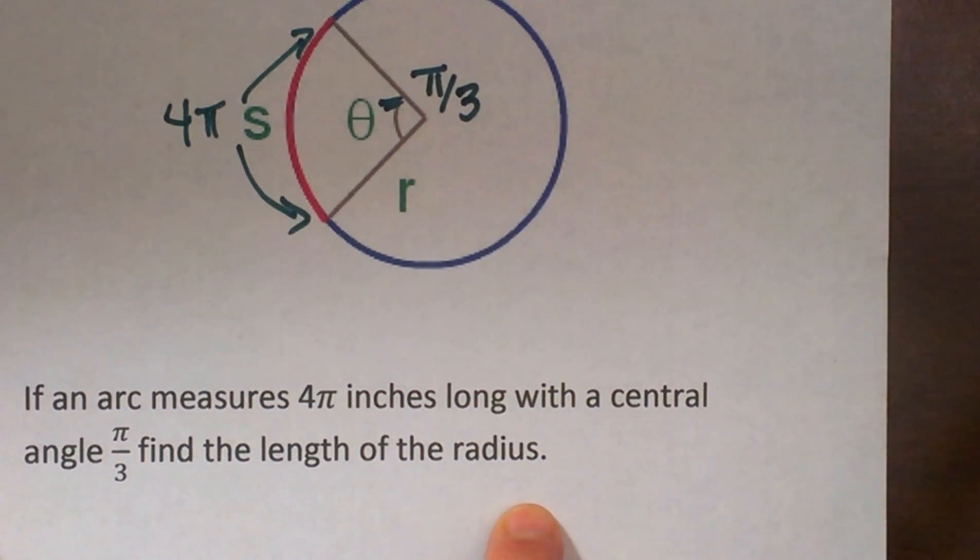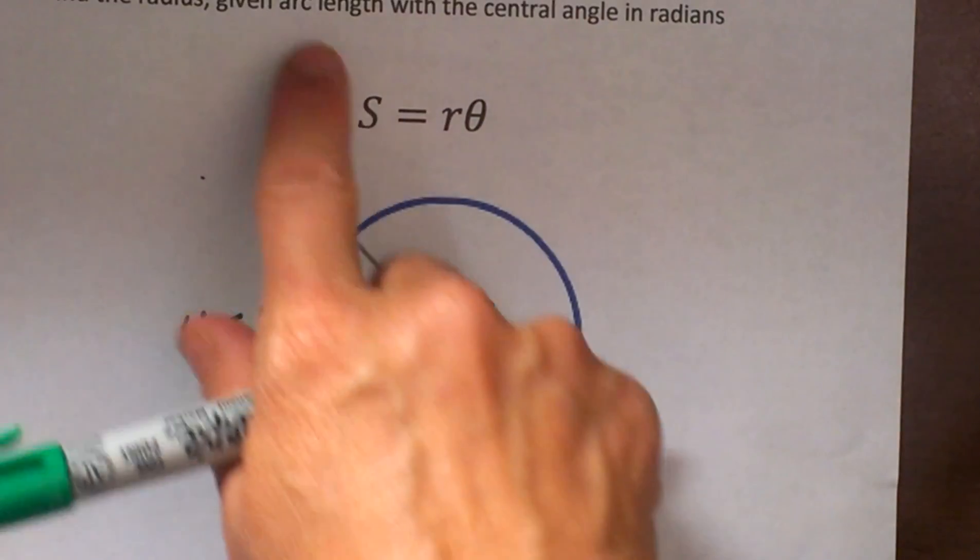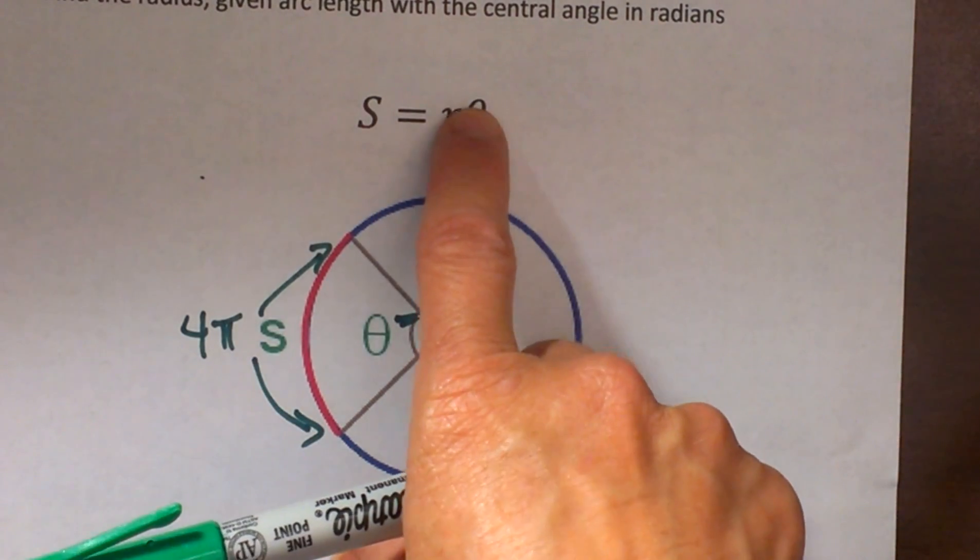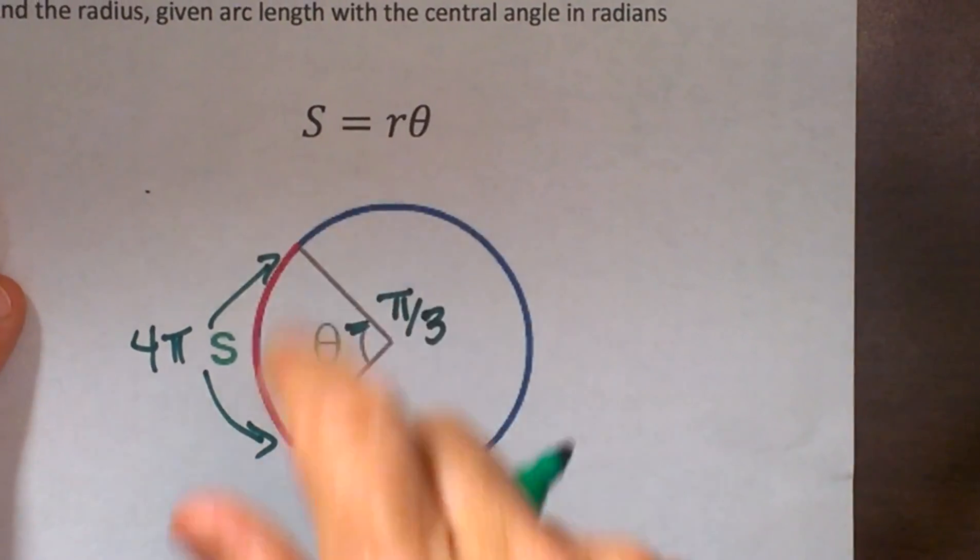Find the length of the radius. We are just going to plug it into this formula. We are going to take 4π and plug it in for S. We are going to take π/3 and plug it in for our angle and we are going to solve for R.